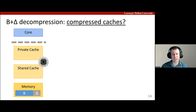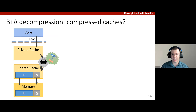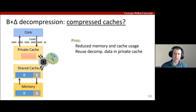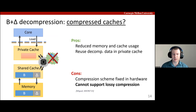So what about hardware compressed caches? They decompress data within the cache hierarchy so that higher levels of cache contain the decompressed data. This allows applications to benefit from temporal locality by keeping decompressed data only in the private cache. Unfortunately, not only is the compression scheme fixed in hardware, but hardware-only compressed caches just cannot support lossy compression. This is because hardware doesn't know which data can tolerate approximation.